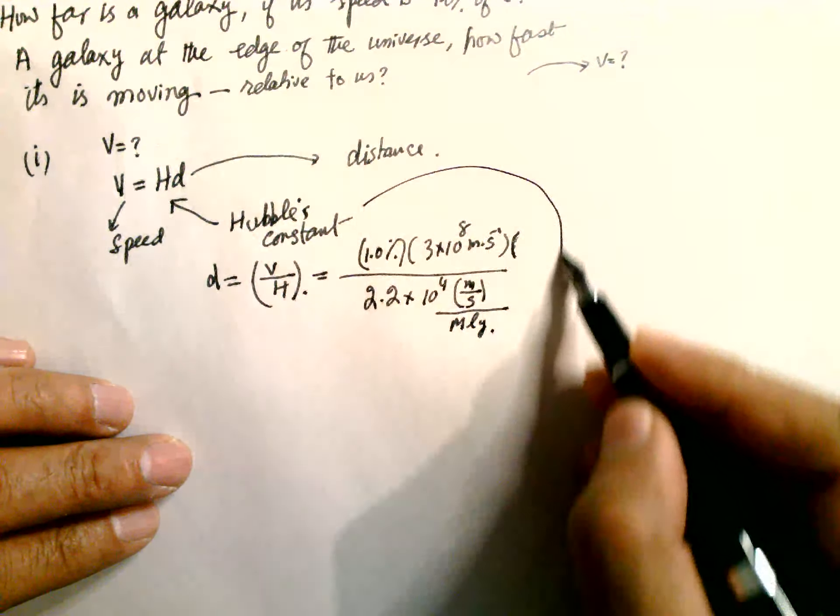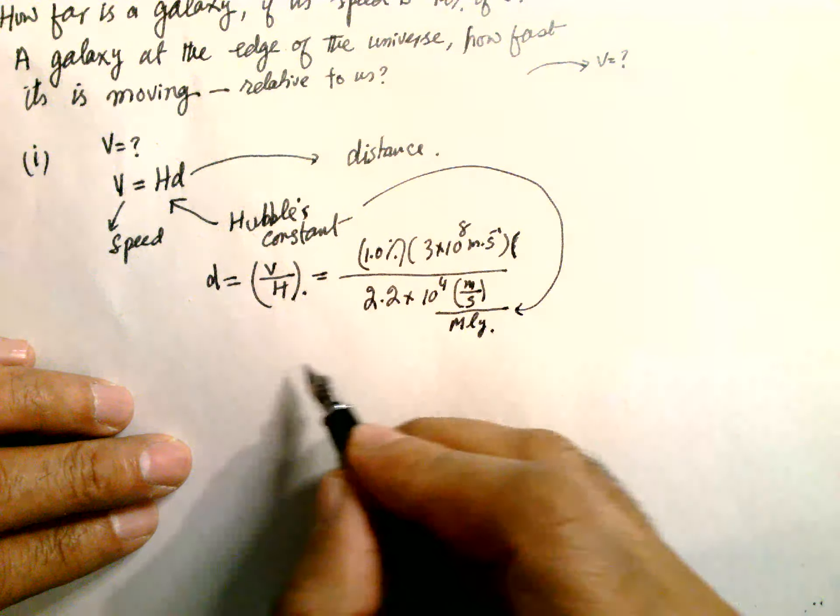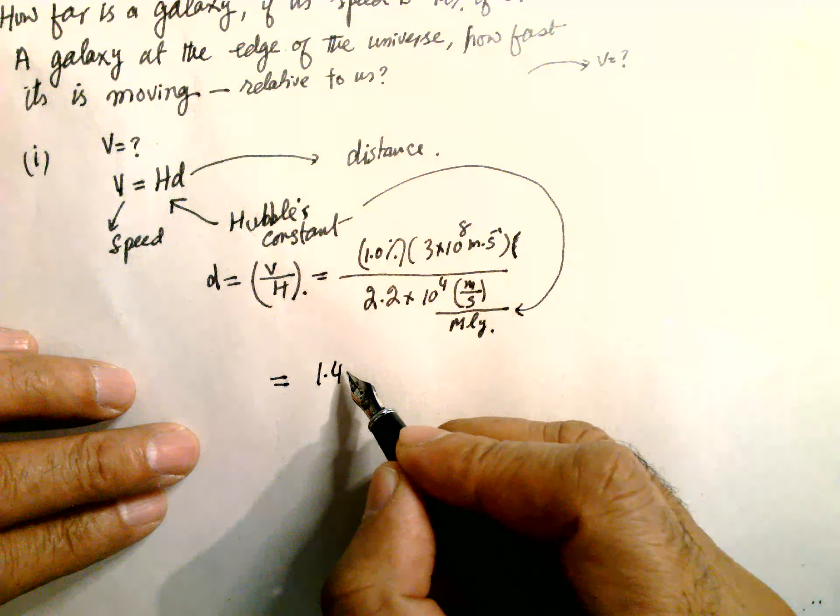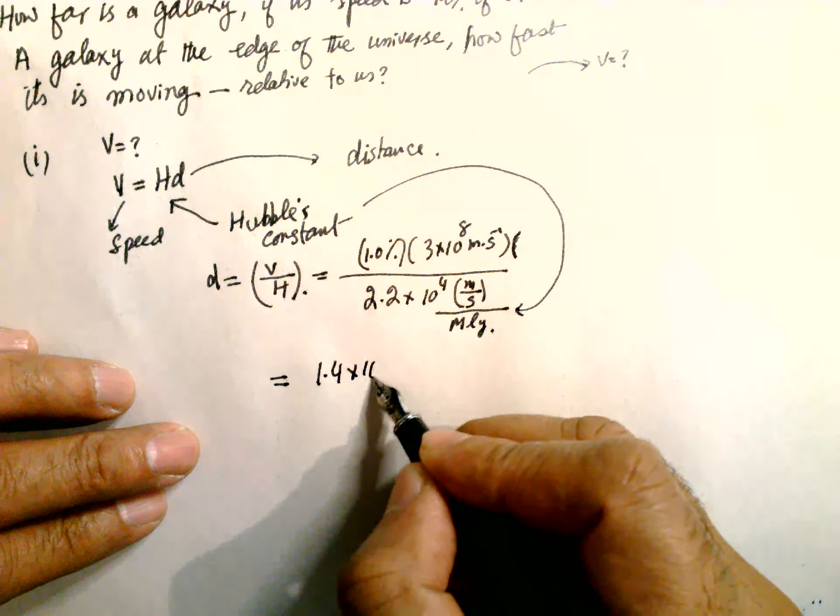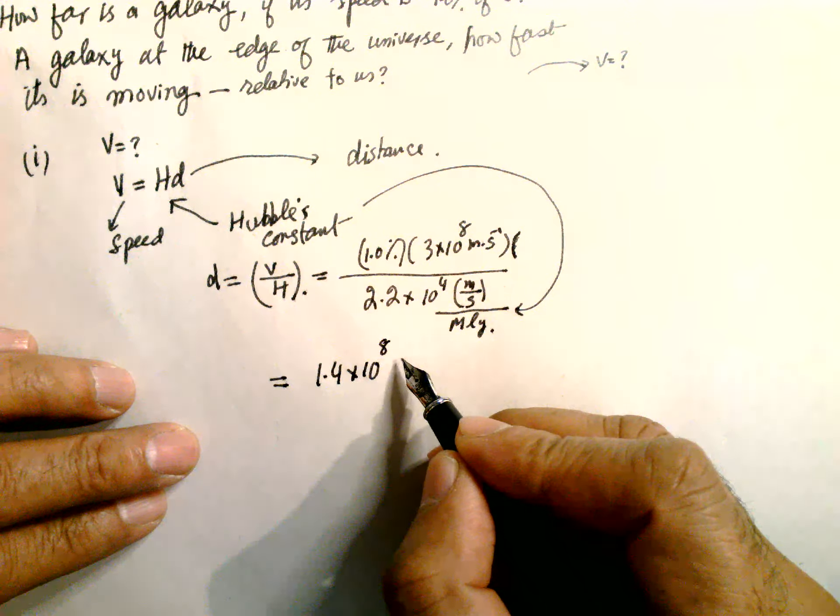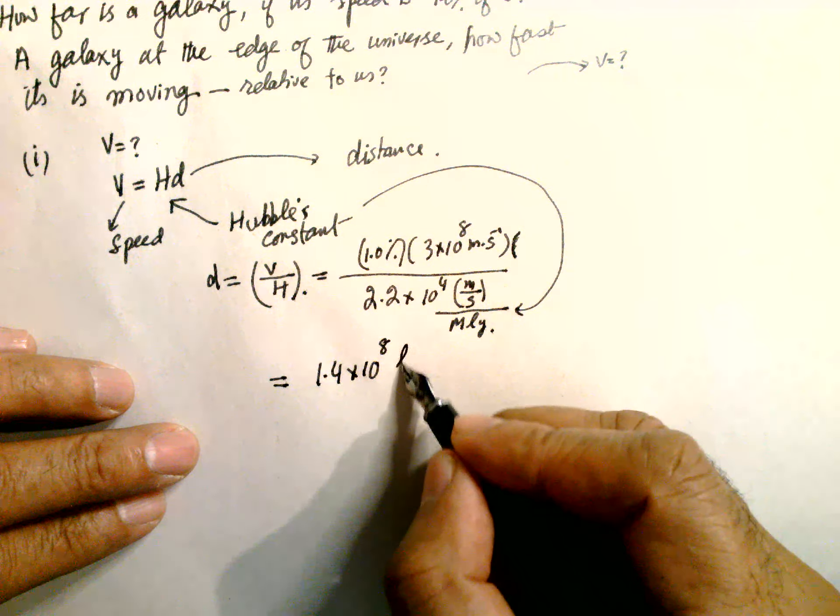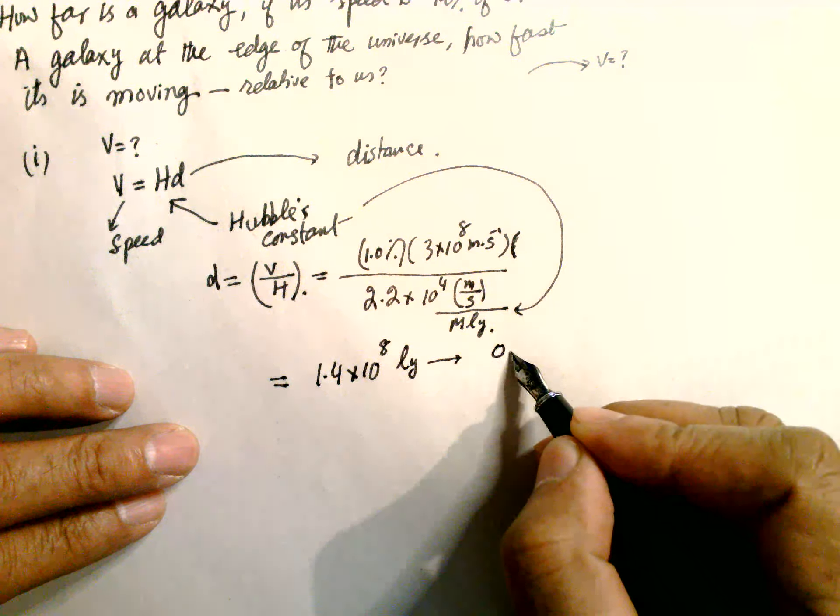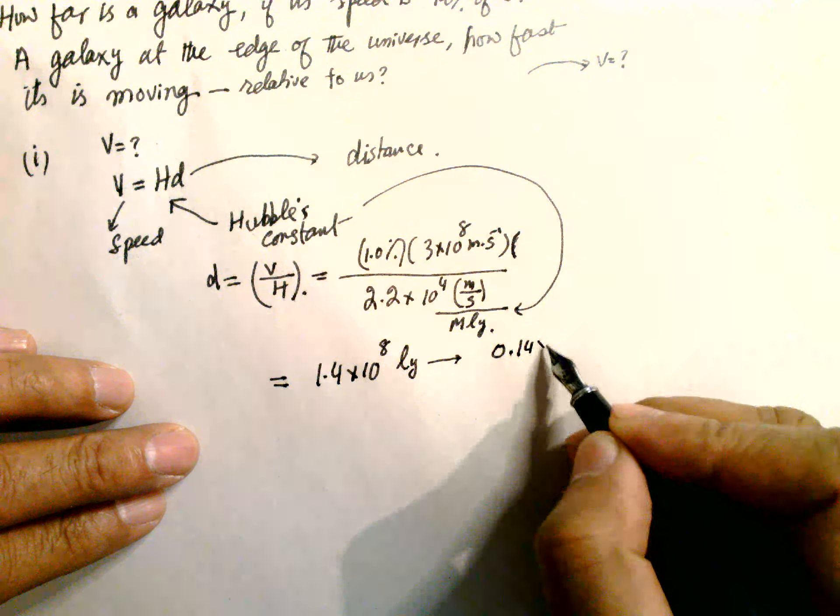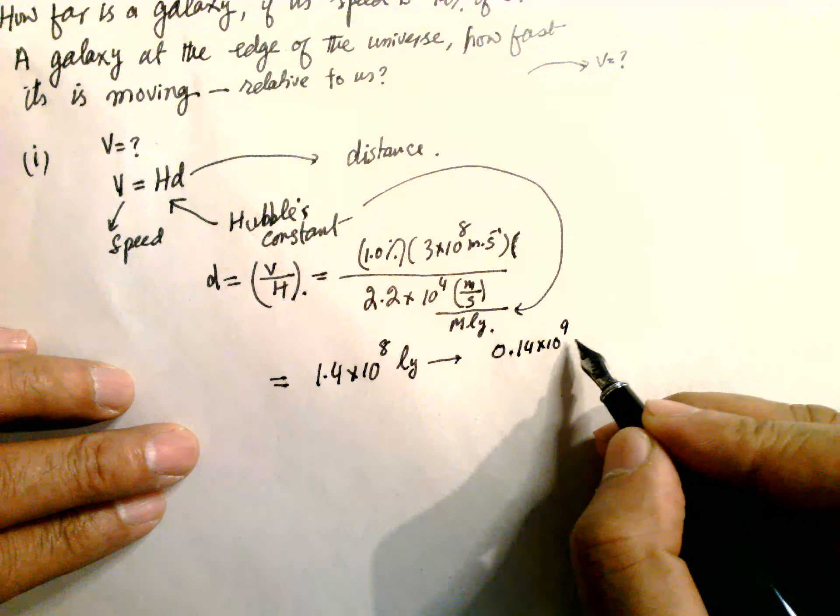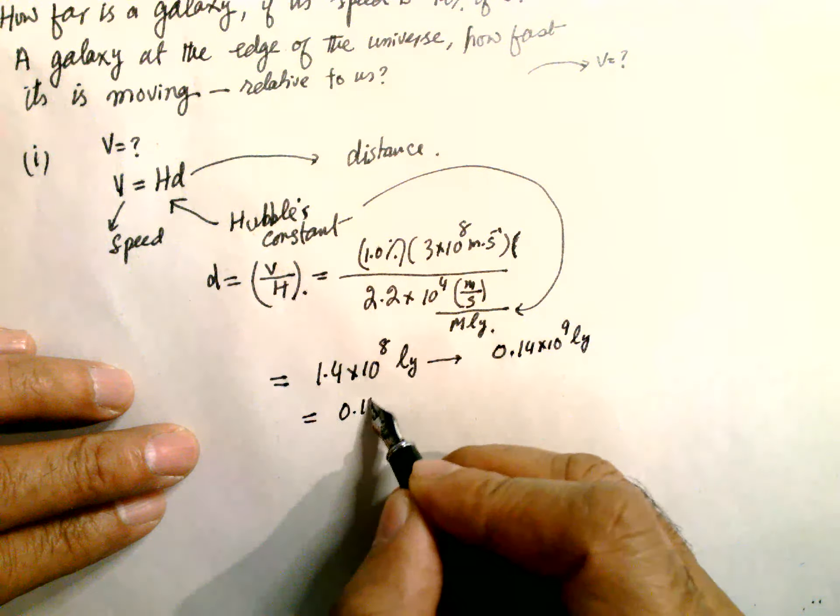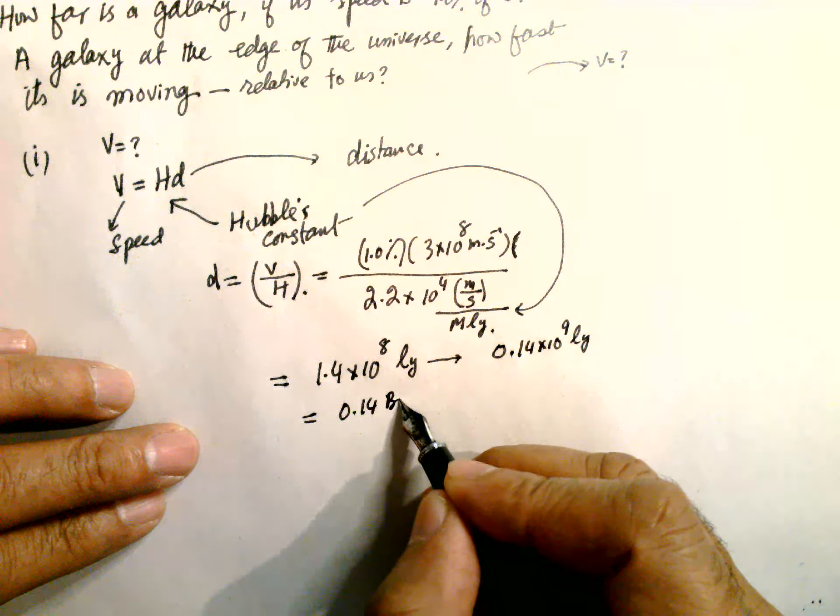So this gives us the distance, which equals 1.4×10^8 light years. This is equal to 0.14×10^9 light years, or 0.14 billion light years.